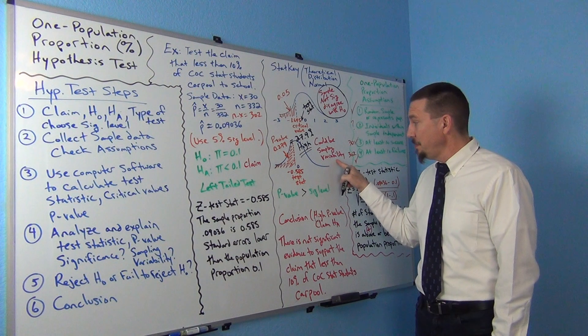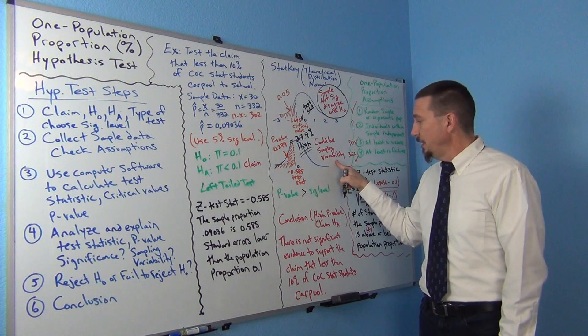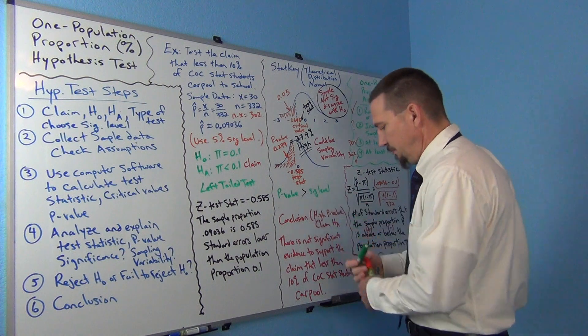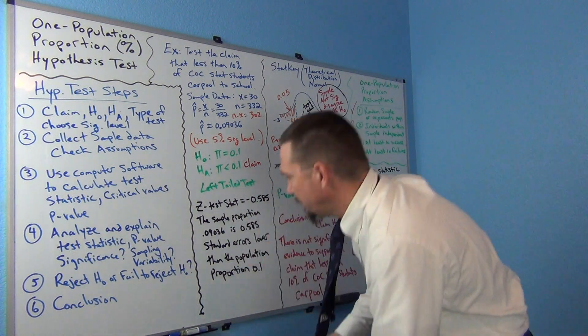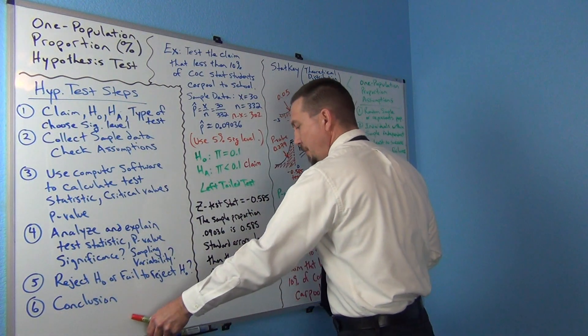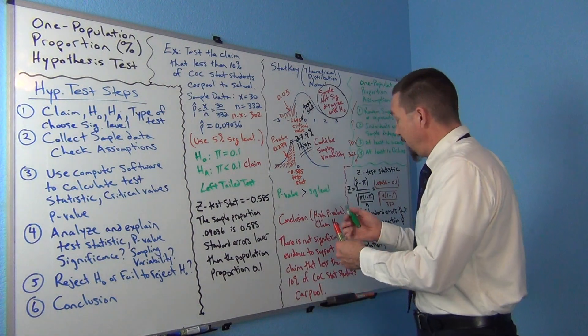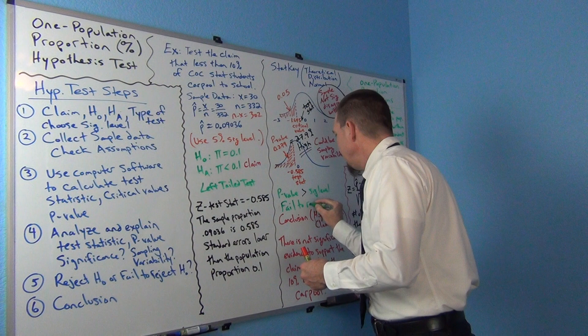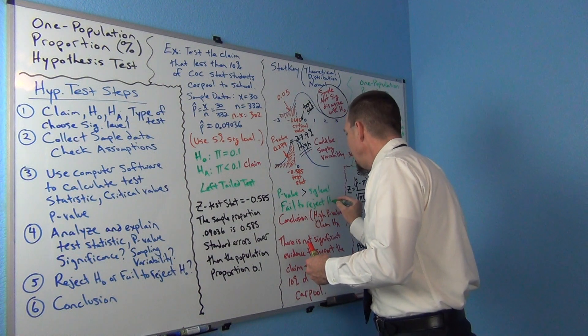That means it could be sampling variability, right? That means what? Do we reject the null or fail to reject the null? Yeah, if you remember, that means reject—sorry, fail to reject the null, right? Fail to reject the null hypothesis.